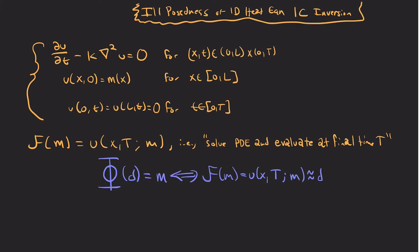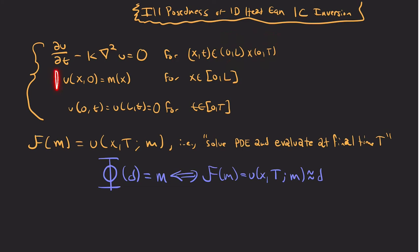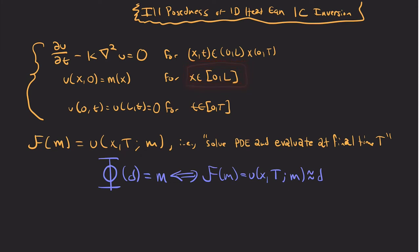Hi everyone. In this video I'm going to show ill-posedness of the 1D heat equation for initial condition inversion. So stated here is our PDE: partial u partial t minus k del squared u equals 0, where k is a diffusivity field. In theory this can be k of x, but for simplicity we're going to assume k is a constant. We're on an interval in the x domain 0 to l and an interval in the time domain 0 to t. Then we have 0 boundary conditions for x equals 0 and x equals l for all times t.